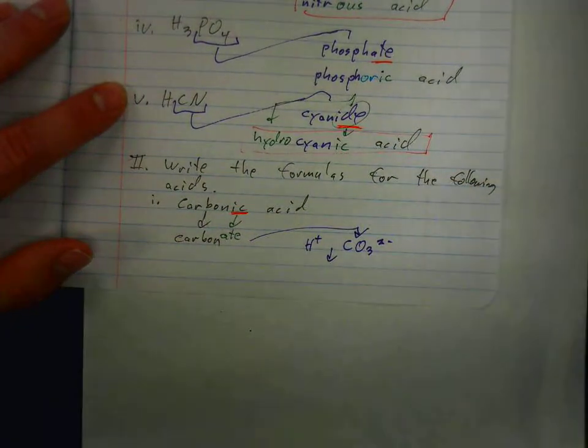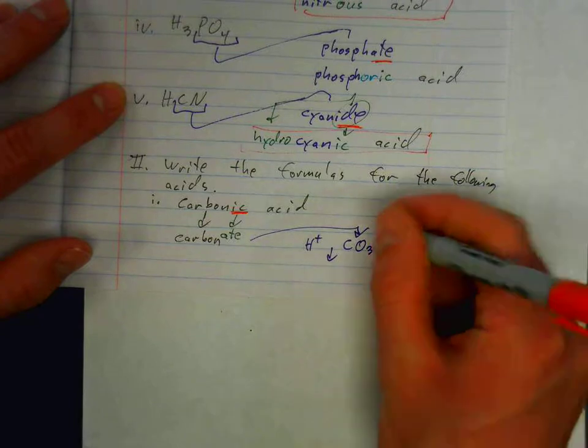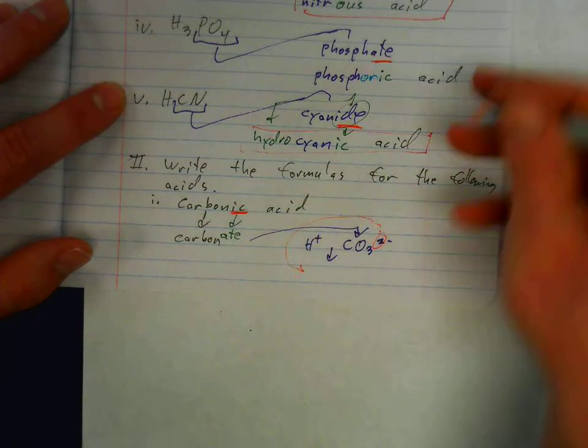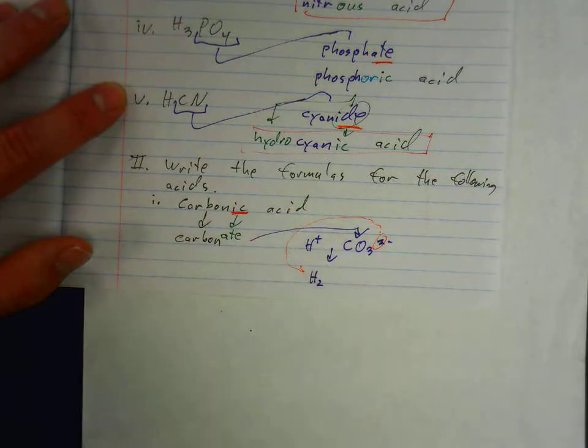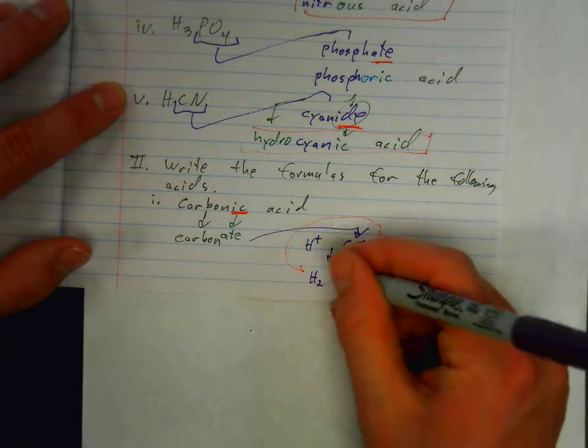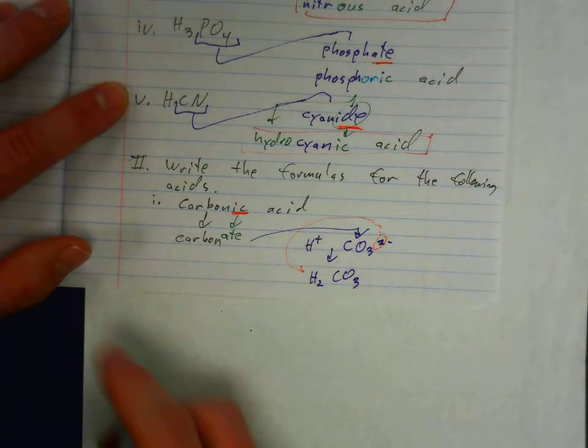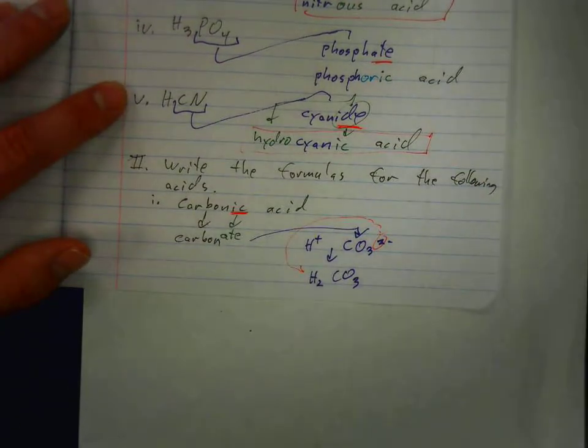Now we just need to do the criss-cross method, as we've learned before. I'm going to take this and criss-cross it around. So I'll have H2, make that 2 the subscript, CO3. And so there's our neutralized compound, the formula for carbonic acid.